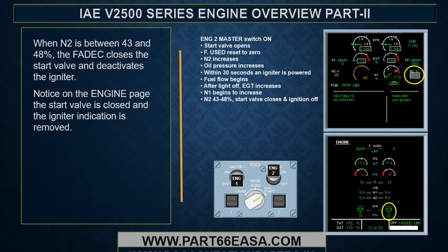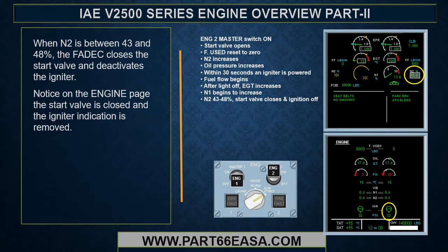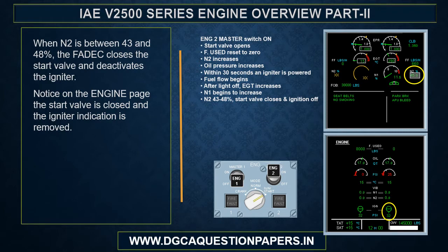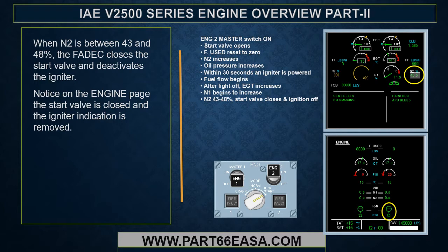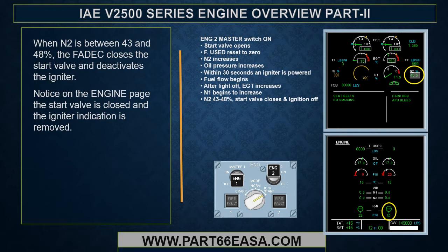When N2 is between 43 and 48%, the FADEC closes the start valve and deactivates the igniter. On the engine page, the start valve is closed and the igniter indication is removed.